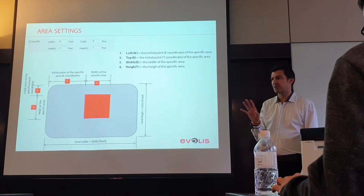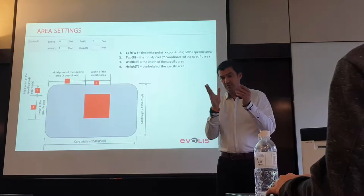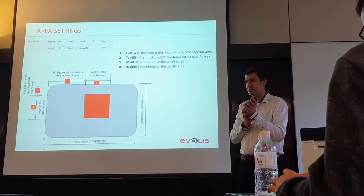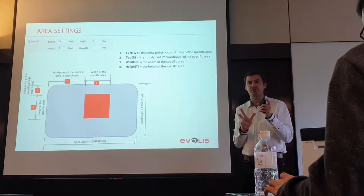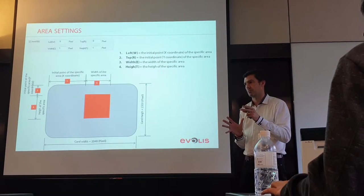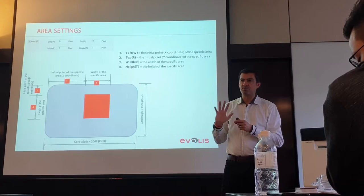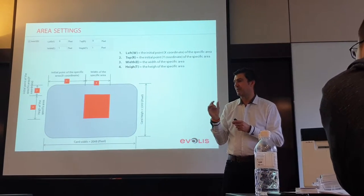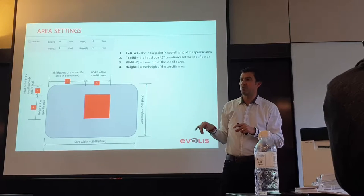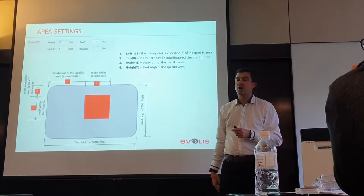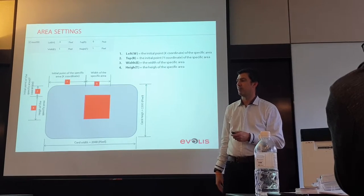This explains why some people calculate exactly on the card size but it doesn't correspond when printed — they forget we print on the clear film that extends over the edge, so they need to readjust. The solution is to use CardPresso: if you define the print settings for the Avancia, CardPresso automatically aligns the design, and you can duplicate the same zone information into the driver to fit correctly.